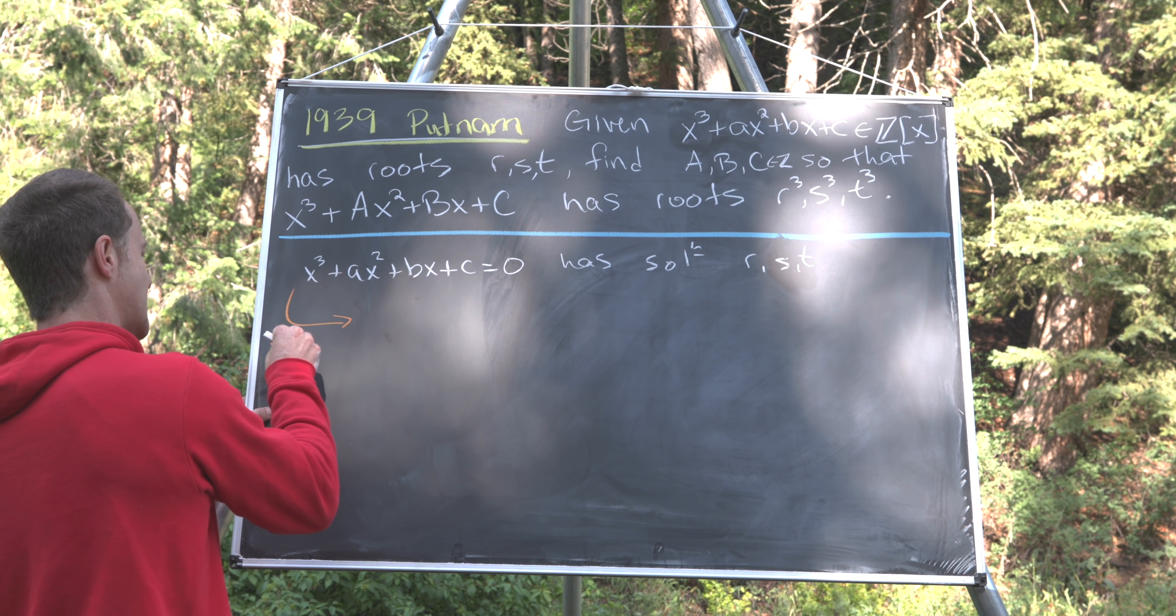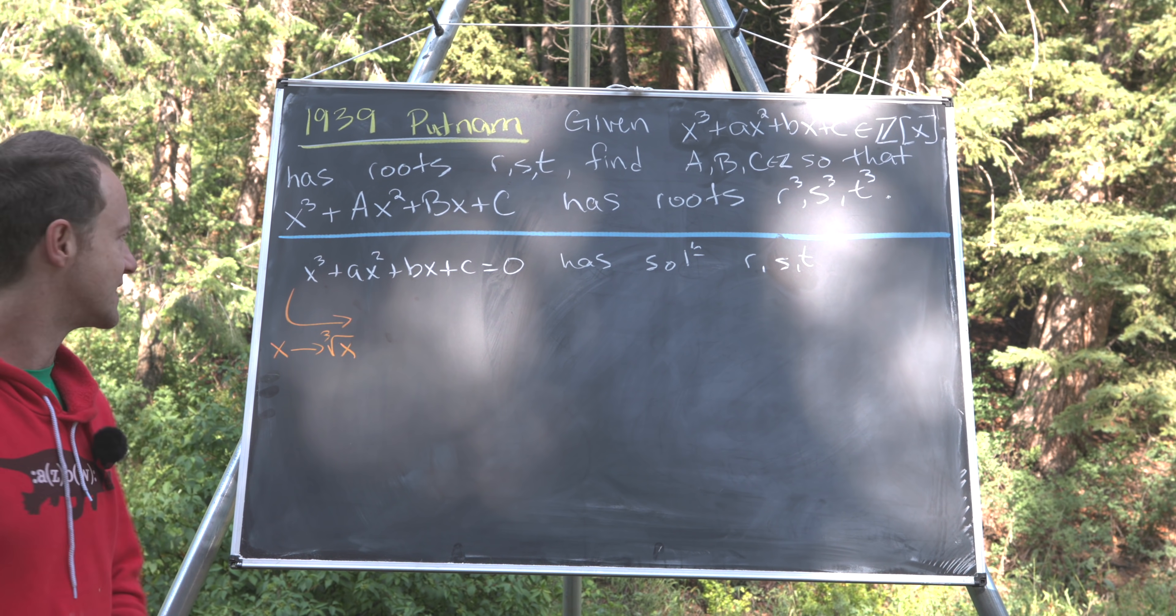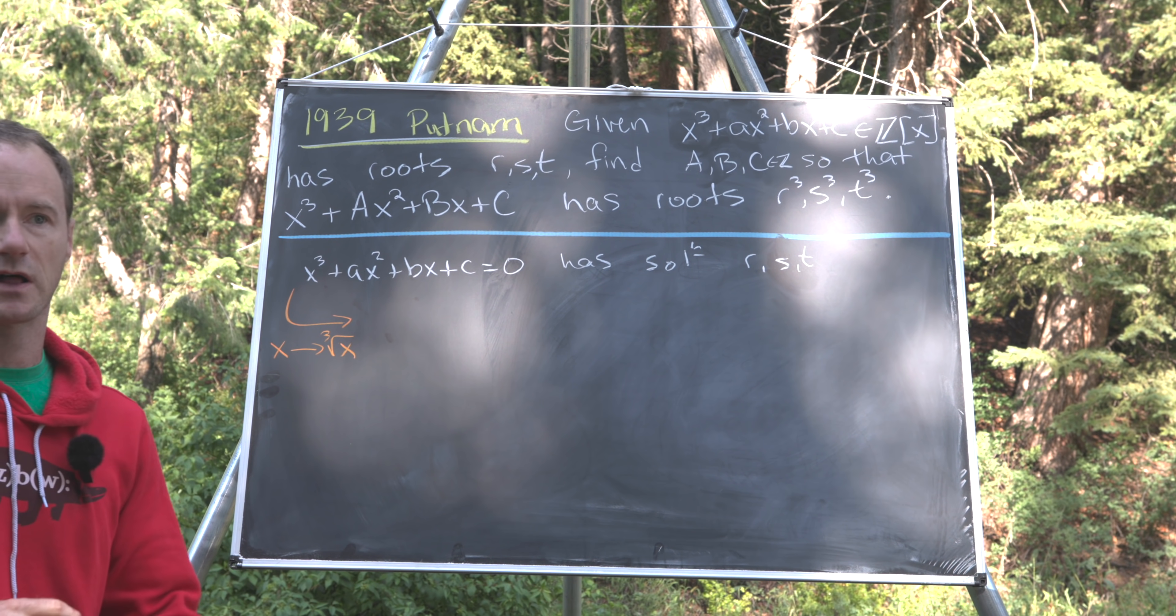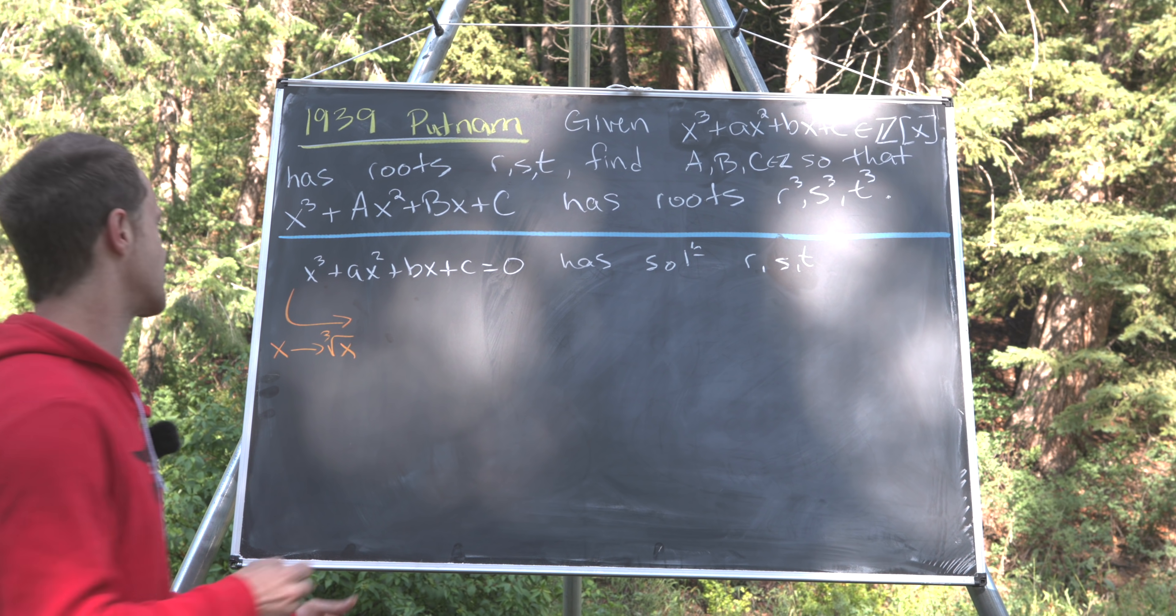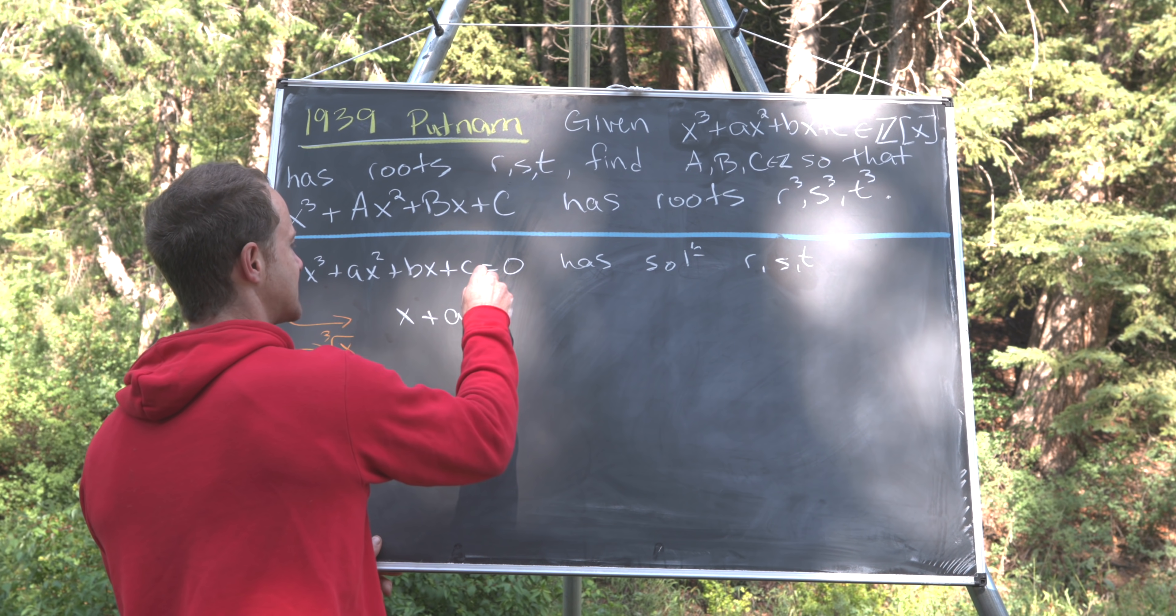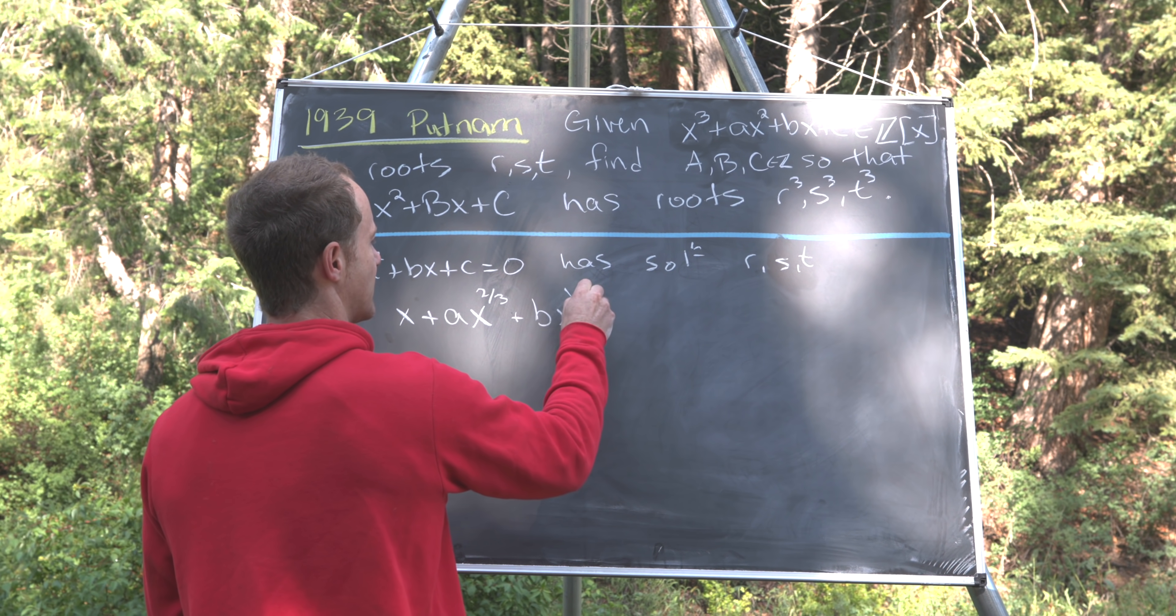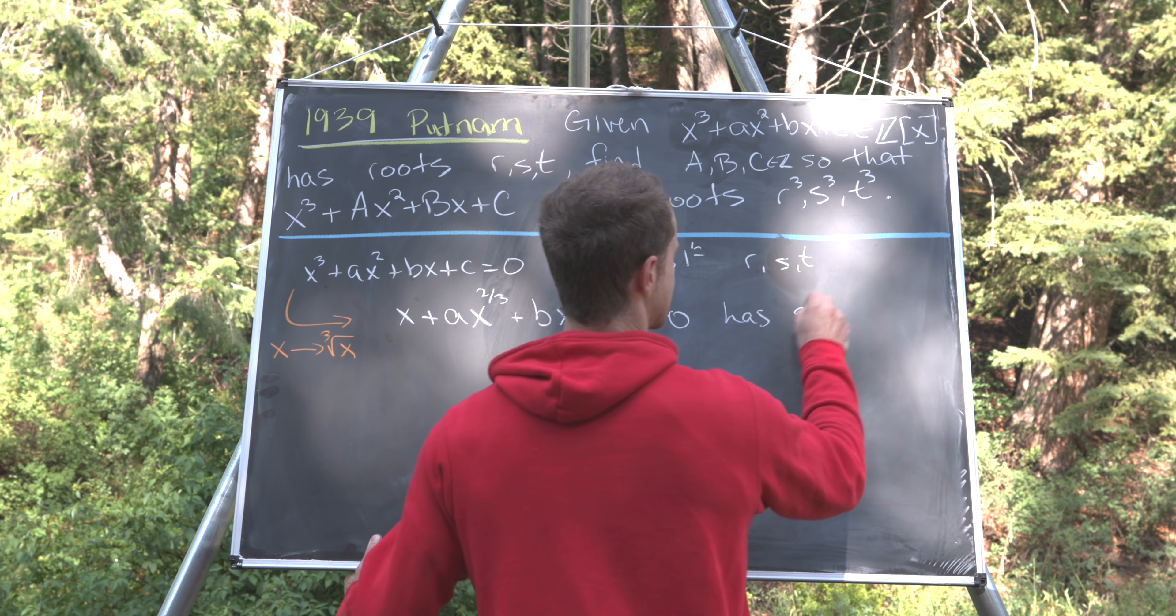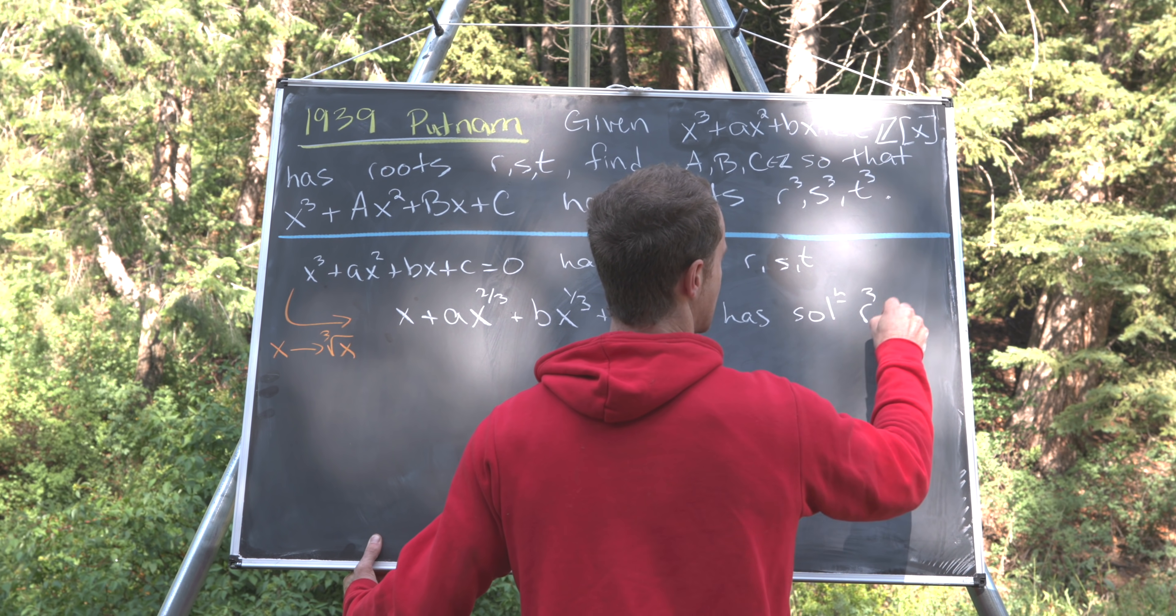But now we can make a little bit of a transformation. We can replace x with the cube root of x, and let's see what that does to the roots. So that's going to give me a new equation. It's no longer a polynomial equation, it's like a radical equation. We've got x + ax^(2/3) plus bx^(1/3) + c = 0, has solutions r³, s³, and t³.